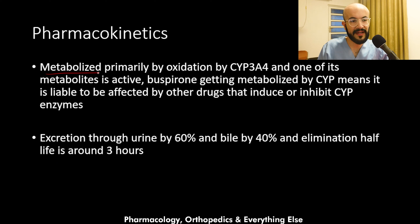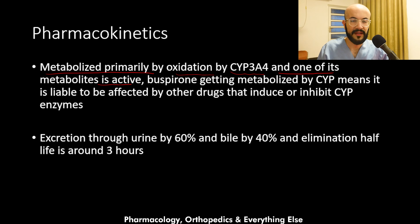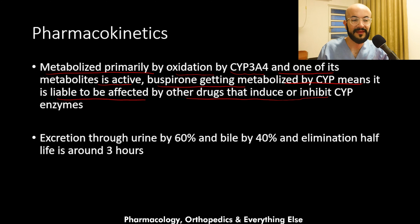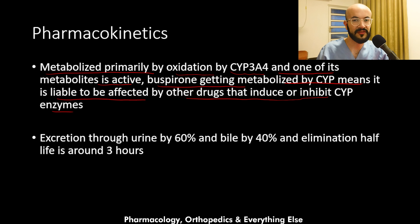Buspirone is metabolized primarily by oxidation via the cytochrome P450 enzymes in the liver, especially the CYP3A4 enzyme, and one of the metabolites is an active metabolite. Because buspirone is metabolized by CYP enzymes, it is liable to be affected by other drugs that induce or inhibit CYP enzymes — for example, a co-administered CYP inducer will lead to lower buspirone plasma levels.